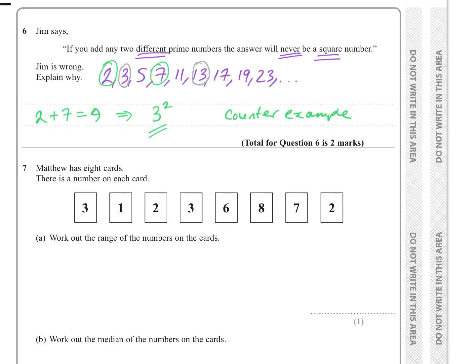I'm sure you can find others as well. Can you see another one? Two and 23 is 25 — that's 5 squared. So there are plenty of choices to choose from for that question.